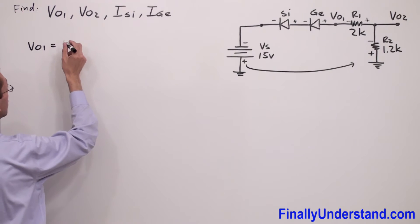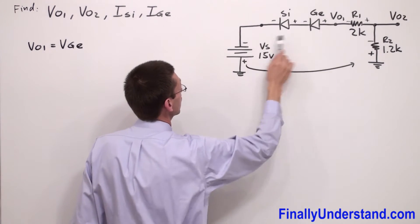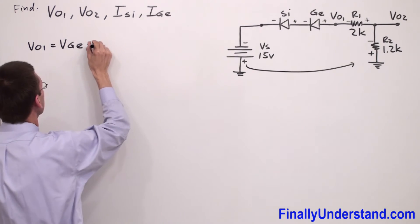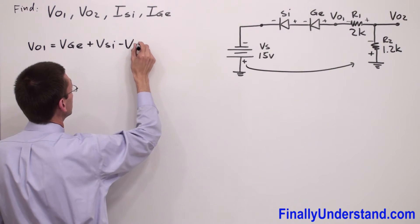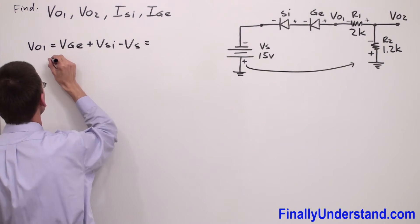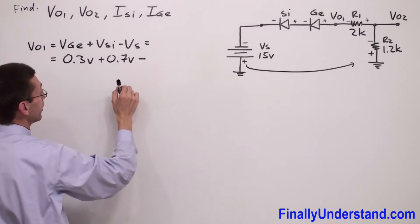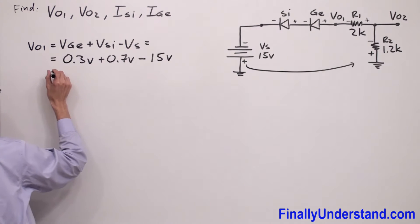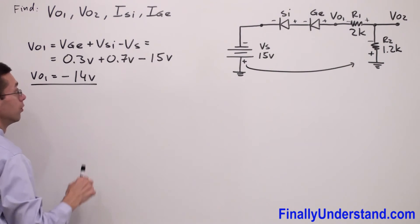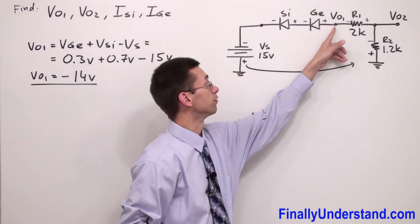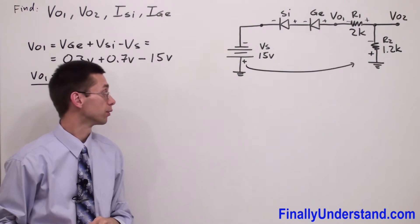So we have Vout1 equal to V_GE — with a positive sign going in that direction — plus V_SI, minus the voltage source. This is equal to 0.3 volts plus 0.7 volts minus 15 volts. So Vout1 is equal to negative 14 volts. The voltage you would measure between this point Vout1 and ground is going to be negative 14 volts. We've found Vout1.